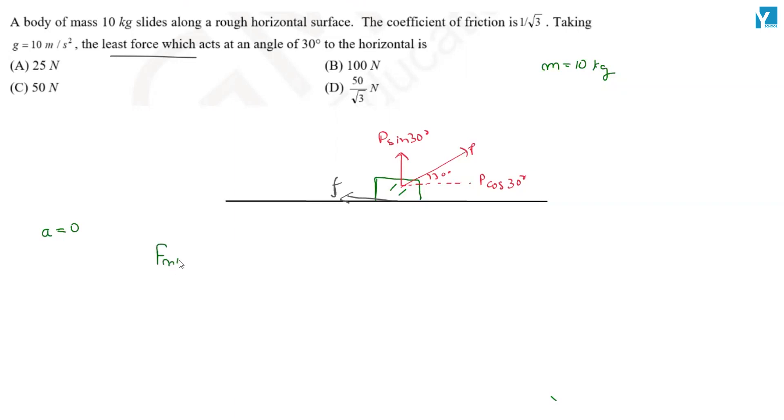So F_net will be equal to 0, will be equal to mass into acceleration. So P cos 30 degrees minus friction. P cos 30 degrees will be equal to friction. And the friction will be limiting.